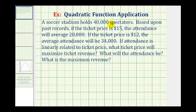A soccer stadium holds 40,000 spectators. Based upon past records, if the ticket price is $15, the attendance will average 28,000. If the ticket price is $12, the average attendance will be 34,000. If the attendance is linearly related to the ticket price, what ticket price will maximize ticket revenue, what will the attendance be, and what is the maximum revenue?